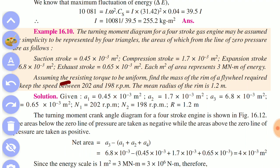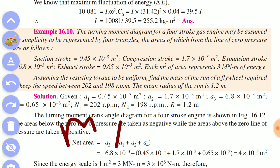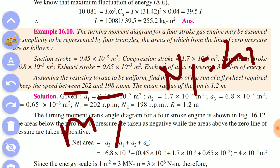The resistance is to be uniform. Find the mass of the rim of the flywheel. The speed range is given: n1 is 190 rpm and n2 is 198 rpm. The mean radius is 1.2.